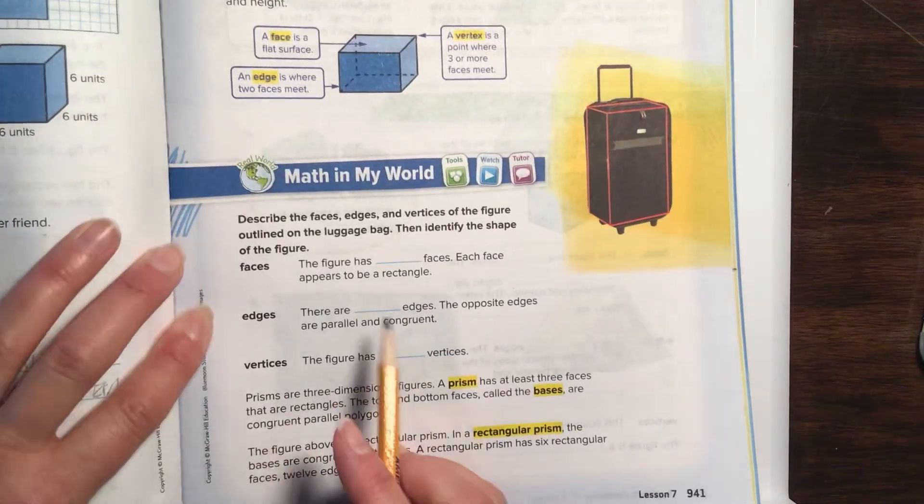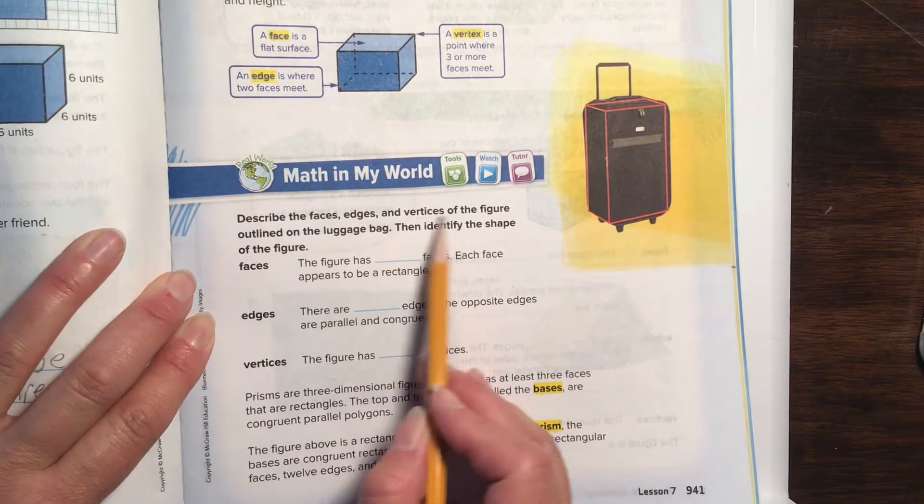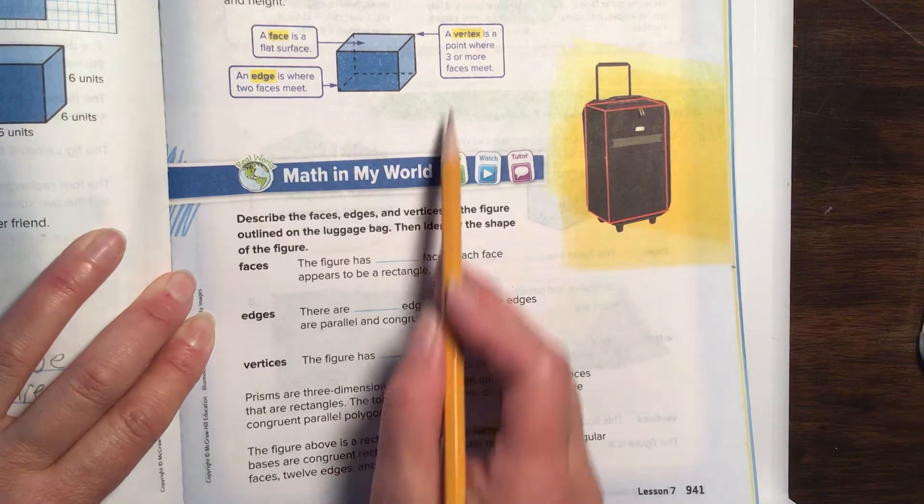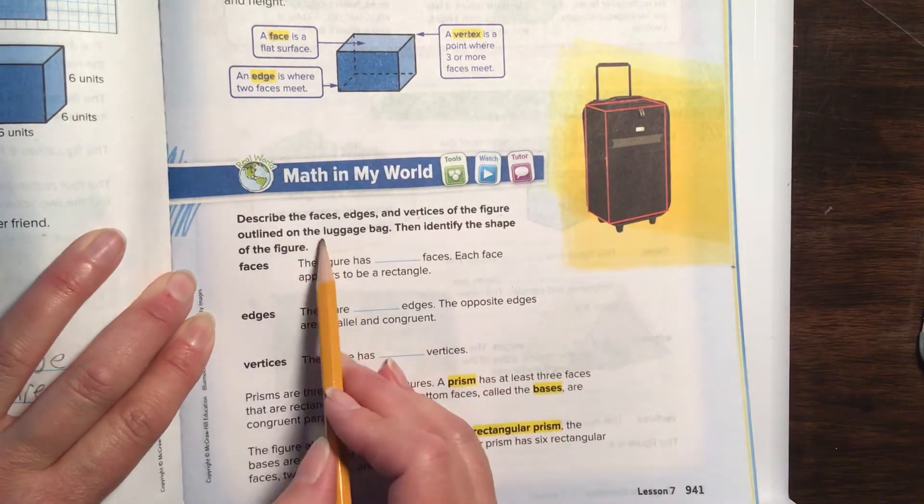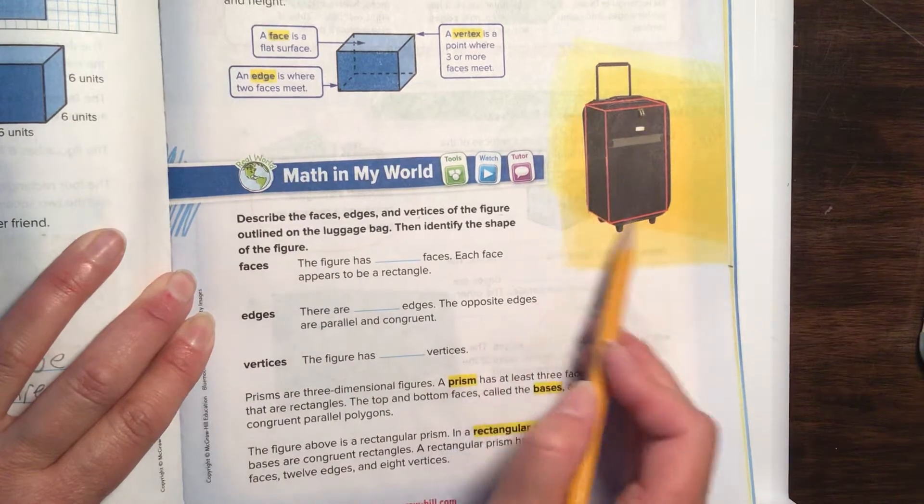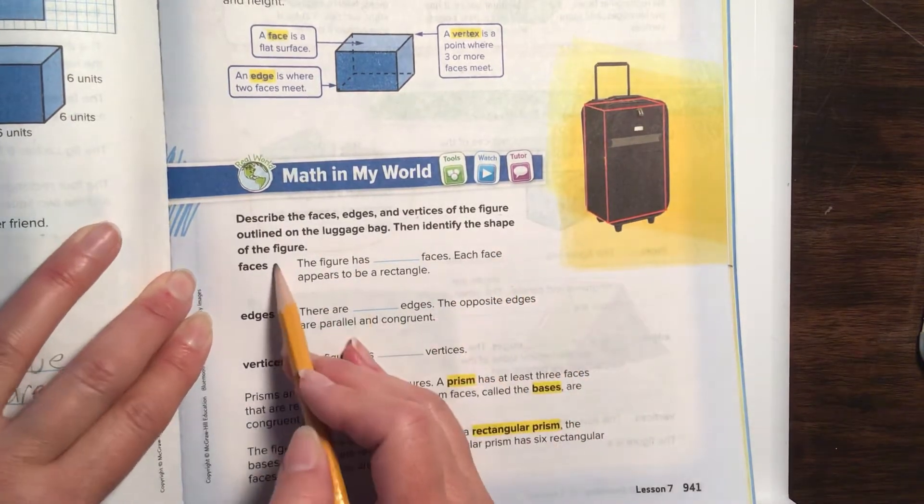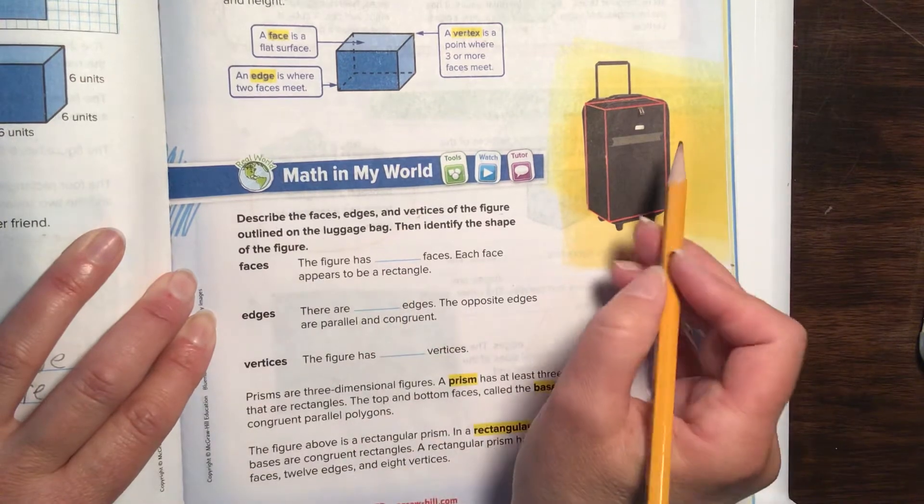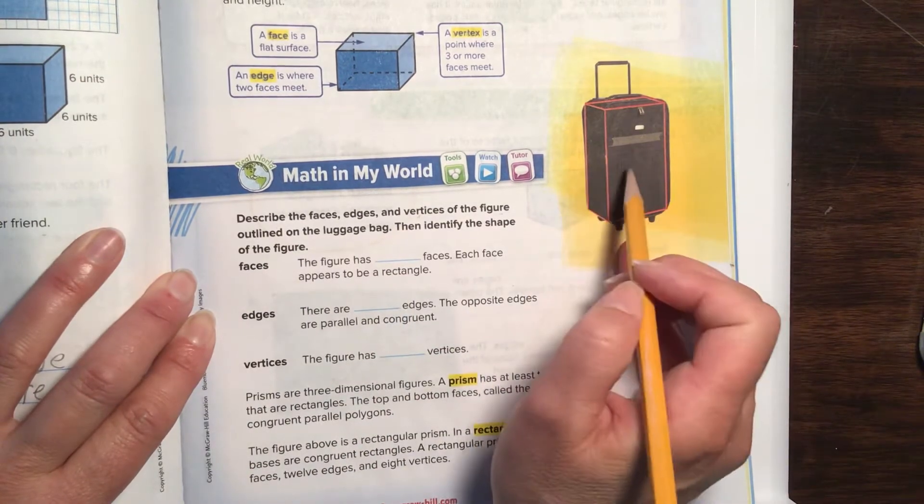We are going to describe the faces, edges, and vertices, or that's a fancy word for saying more than one vertex, of the figure outlined in the luggage bag. This red line. Then identify the shape of the figure.